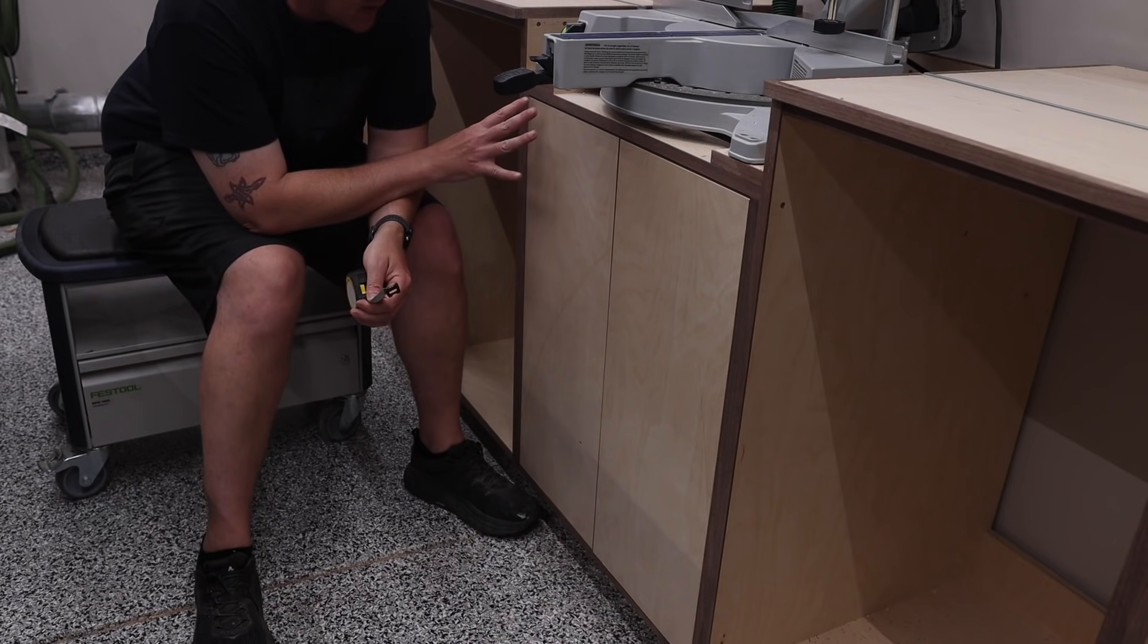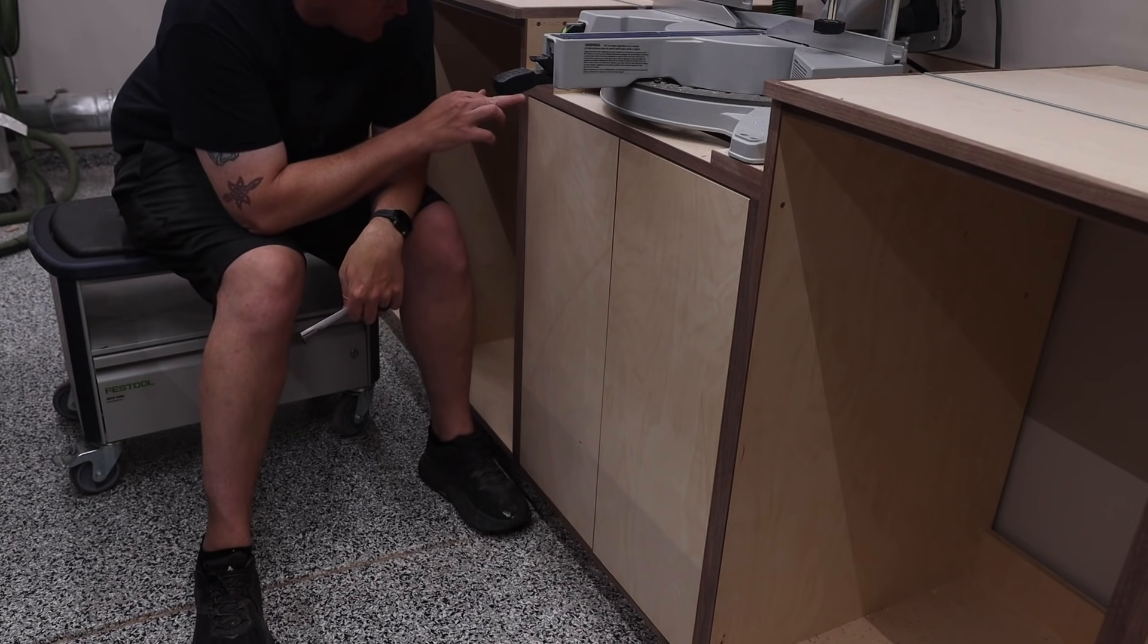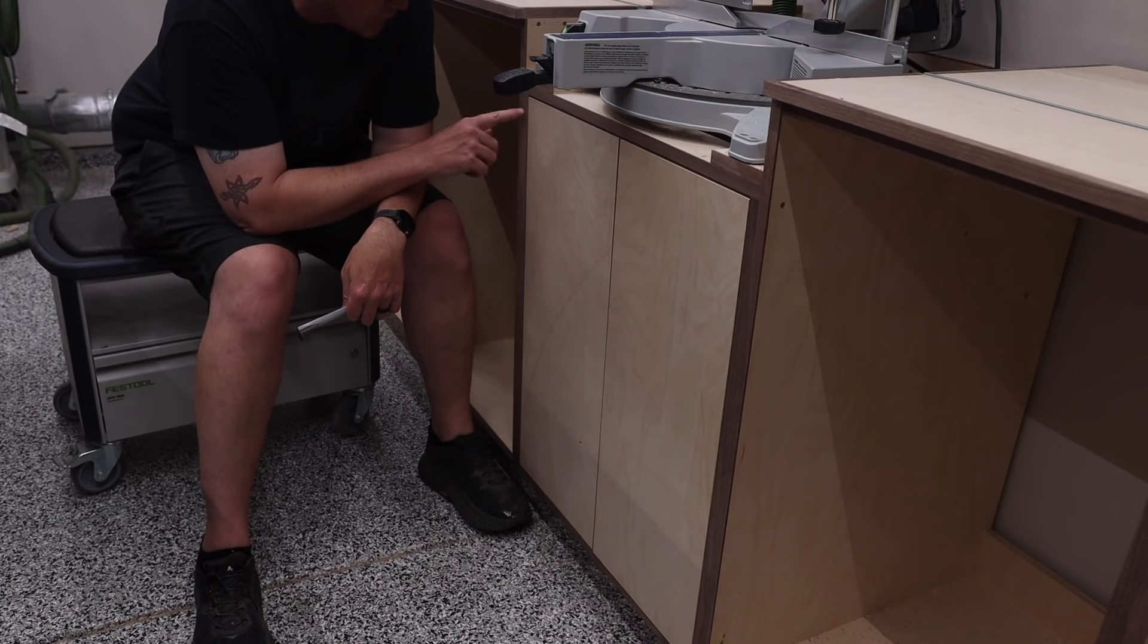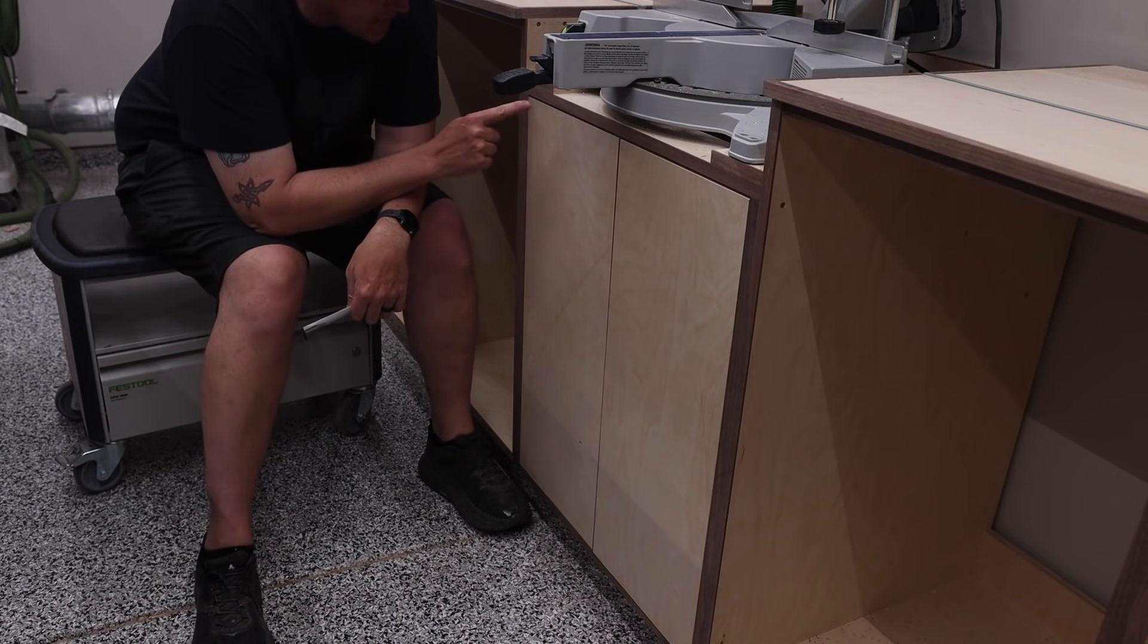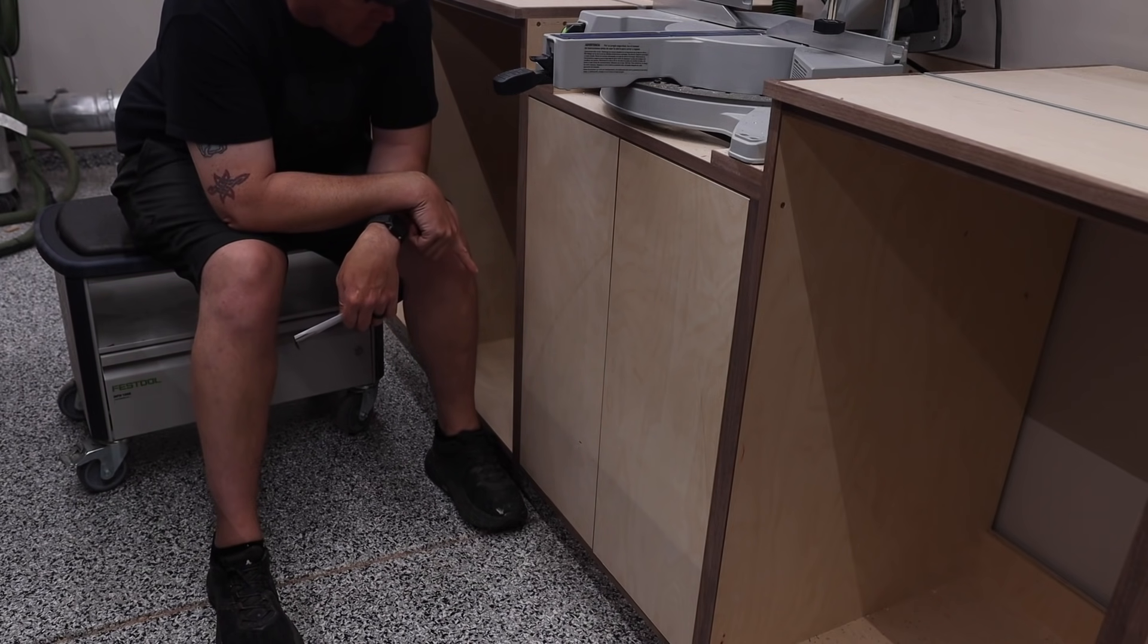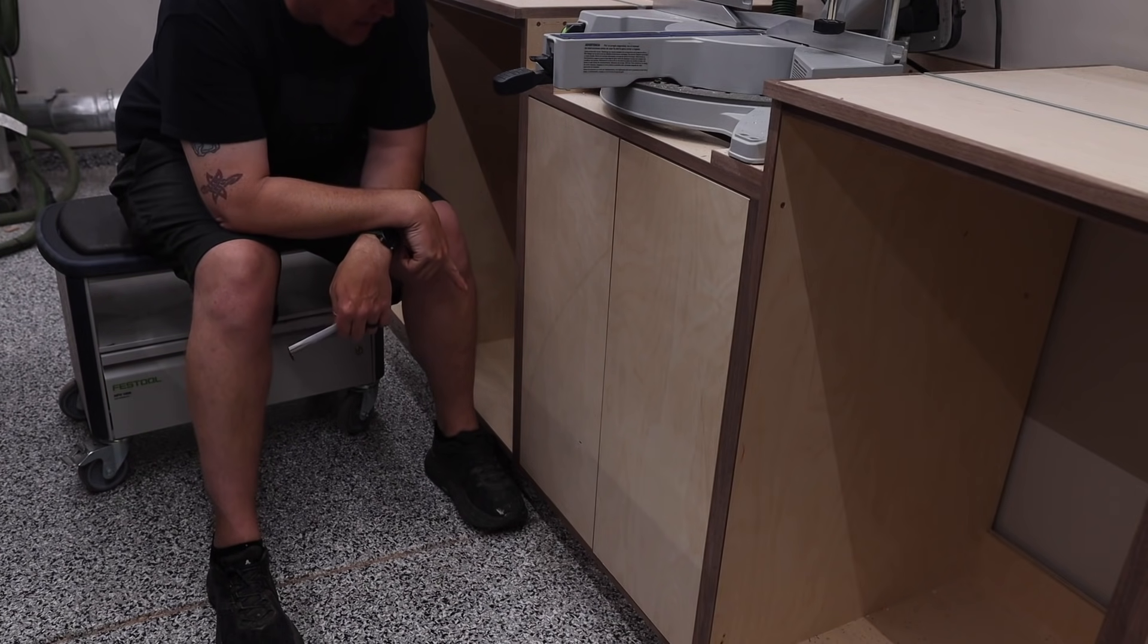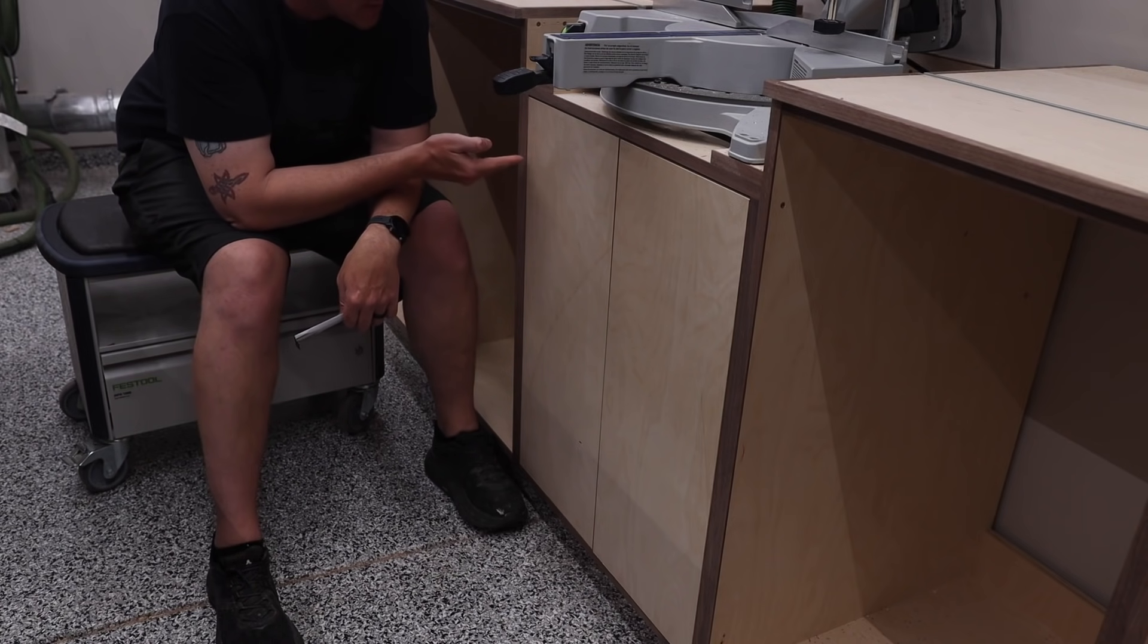Remember before I was talking about that you want to have a two millimeter reveal all the way around. To make this easy, we're going to install our hinges a hundred millimeters down, which is about the equivalent of four inches, which is fine for these doors. Now on the doors, on the hinge locations, because I want two millimeters up top and two millimeters down below, we need to subtract two millimeters from those. So I'm going to mark a line at 98 millimeters here and then down at the bottom from the bottom up 98 millimeters.